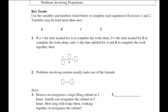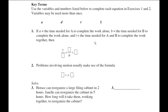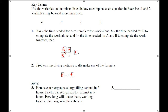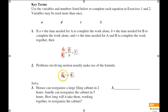One of the main formulas we use is the distance formula and work formula. The work formula is T over A plus T over B equals 1, which stands for the whole job. Our distance formula is distance equals rate times time.